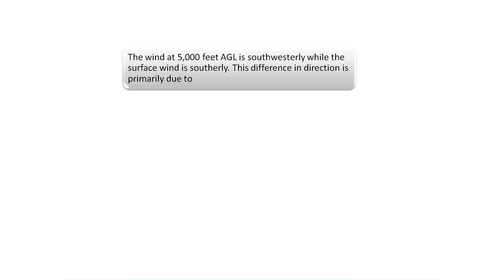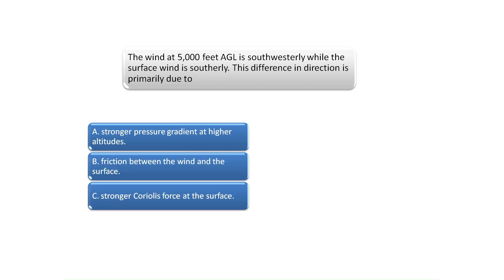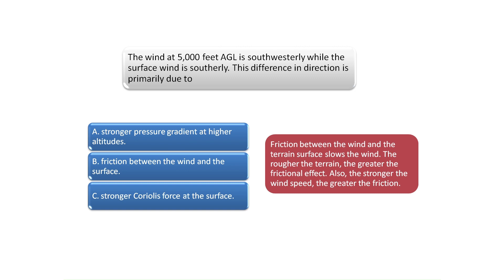The wind at 5,000 feet AGL is southwesterly while the surface wind is southerly. This difference in direction is primarily due to terrain on the surface of the earth causing friction which slows the wind speed. The rougher the terrain, the greater the frictional effect. The difference in wind direction and wind speeds can be attributed to changes in terrain and the frictional effects associated with different topography over the surface of the earth.